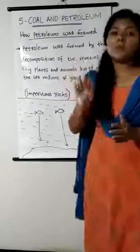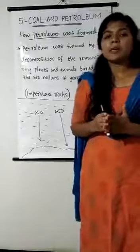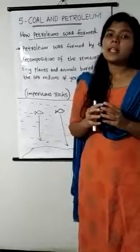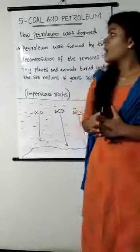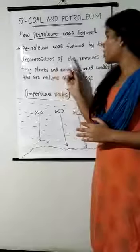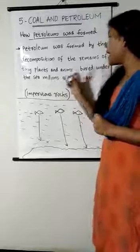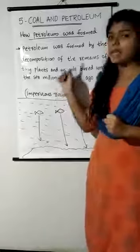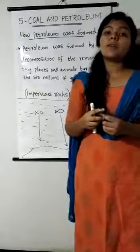Next topic is how petroleum was formed. Just like coal, petroleum is also a fossil fuel, so it is formed in a very similar way. Petroleum was formed by the decomposition of the remains of tiny plants and animals buried under the sea for millions of years — that is, petroleum is formed from the remains of sea creatures.